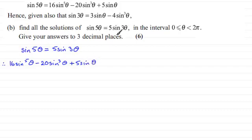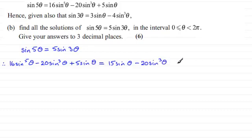That equals 5sin3θ, so we multiply each term by 5: we get 15sinθ, and 5 times minus 4sin³θ gives minus 20sin³θ. Making this equal to 0 and grouping terms, we get 16sin⁵θ. The sin³θ terms cancel out, and taking 15sinθ from both sides leaves minus 10sinθ, all equal to 0.